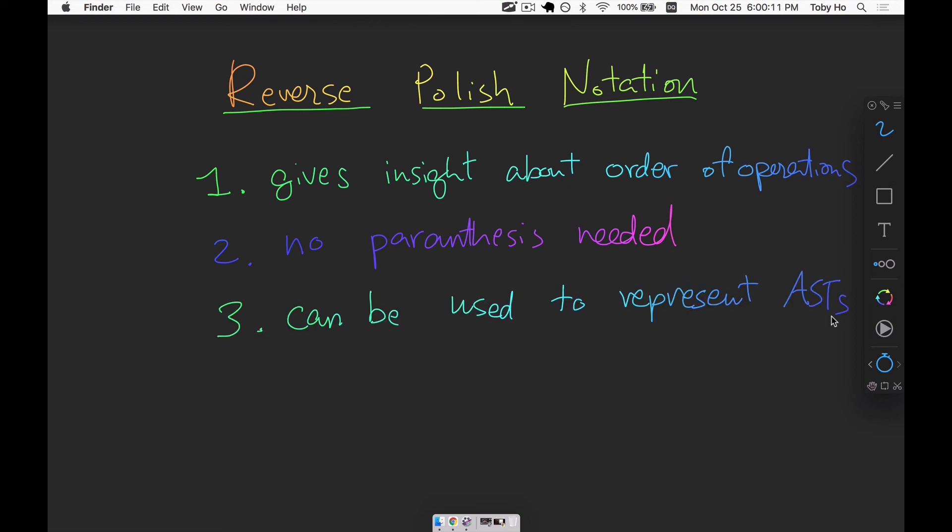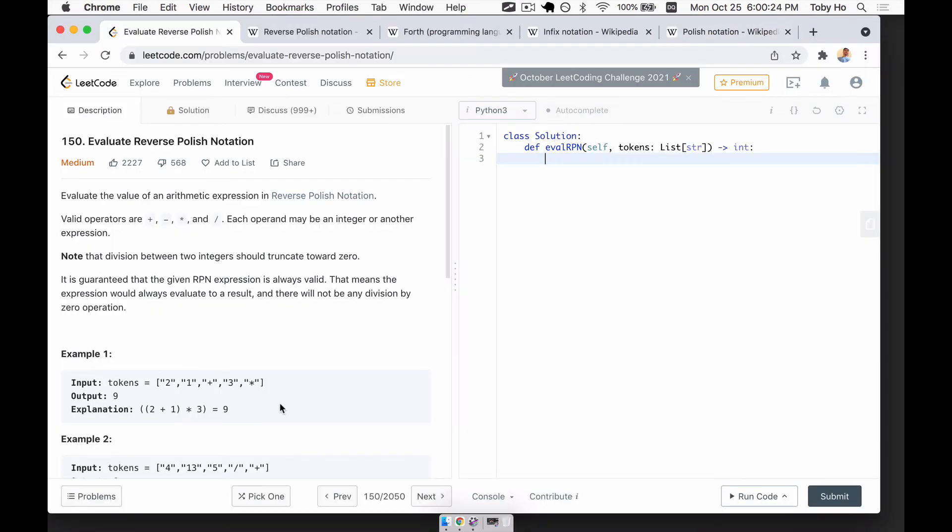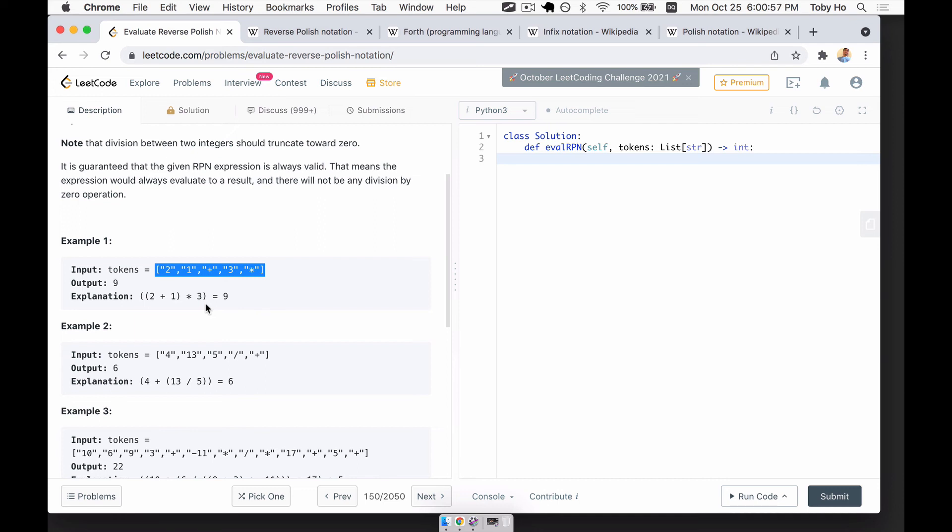The third thing to note about reverse Polish notation is that it can be used to represent ASTs. We won't get into that in this episode, but we will in a future episode. So it just happens that the leetcode.com, my favorite code challenge website, has the reverse Polish notation challenge already written out. So I didn't even have to write it out for you. You're welcome to go to this website and try out your solution. And it even has a verifier that you can run.